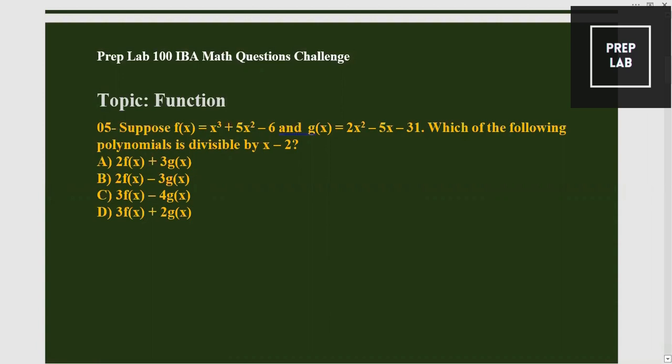divisible by x - 2. Okay, so we have given two functions, and then we have to find if it is divisible by x - 2. It means that it will be equal to zero, equally divided, that's why there is no remainder. So when these two functions will be divided by x - 2, the